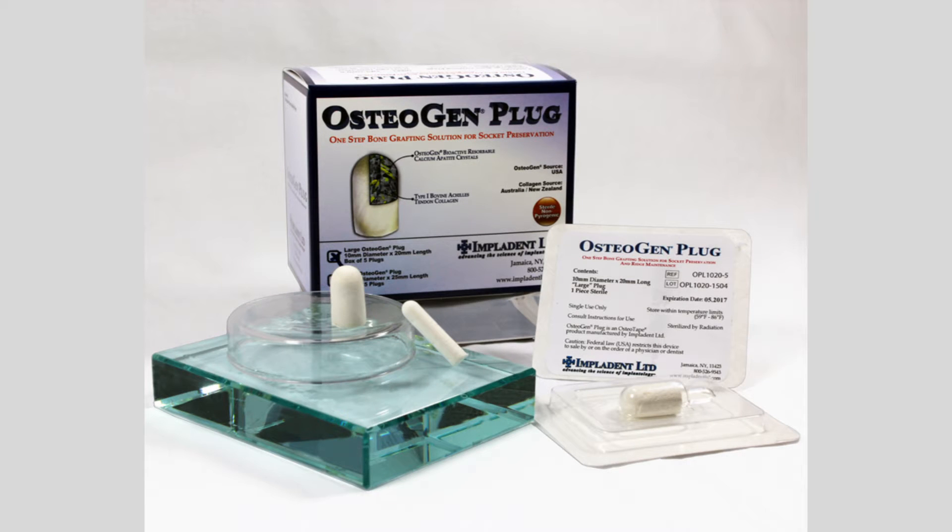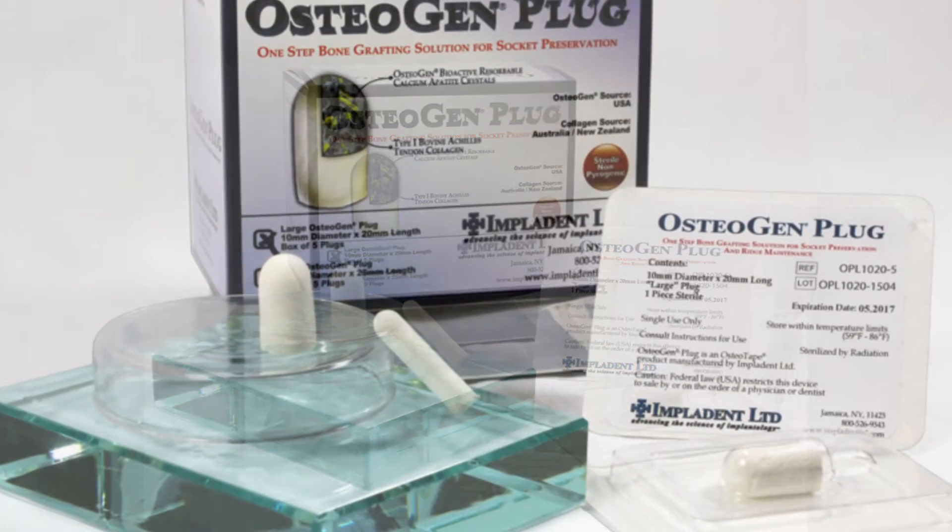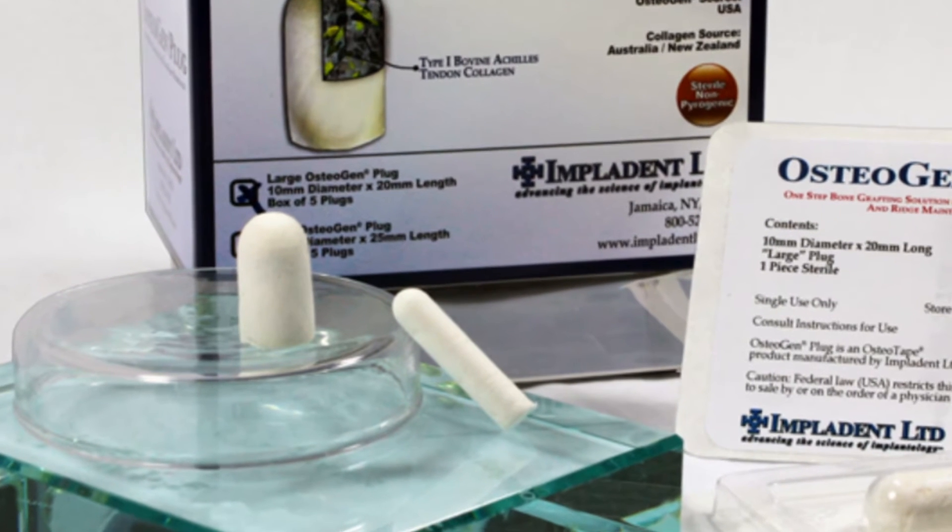Implident Limited is proud to introduce the Osteogen Bone Grafting Plug, the one-step bone graft for socket preservation and ridge maintenance. The idea behind the Osteogen Plug is simple. We take a standard collagen plug and fill it with our Osteogen Calcium Phosphate Bone Graft.